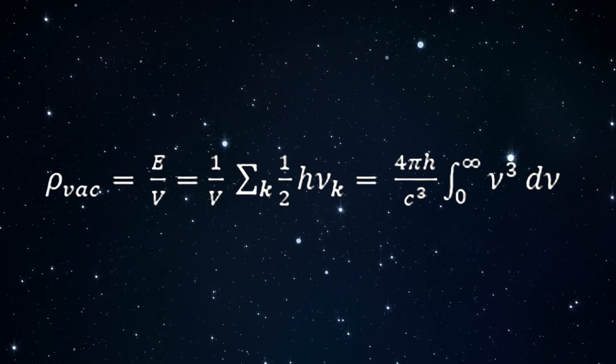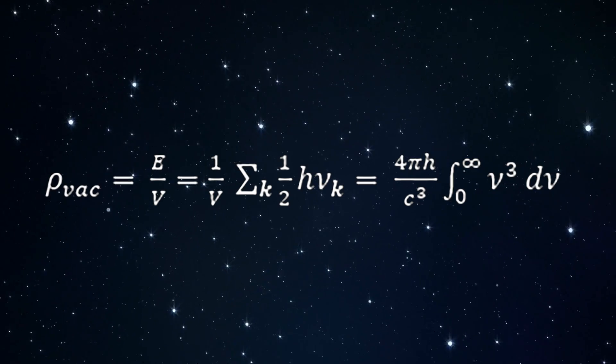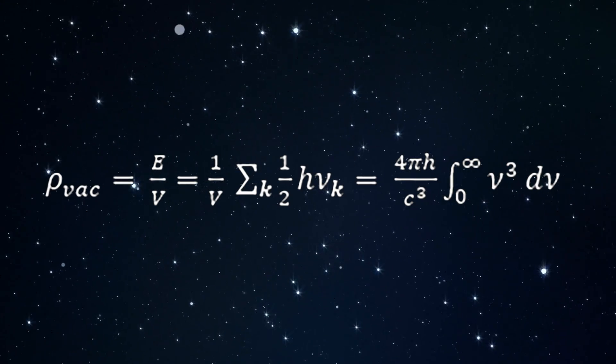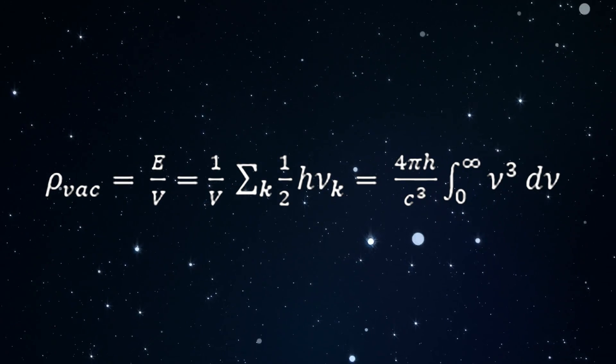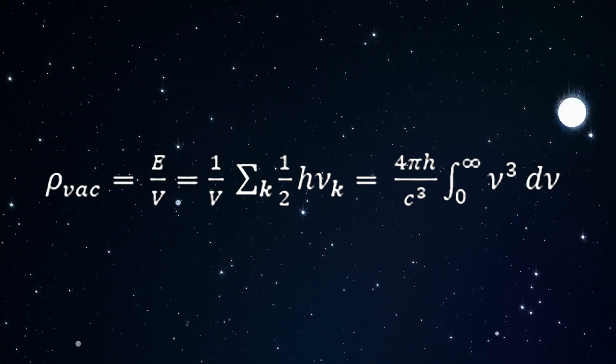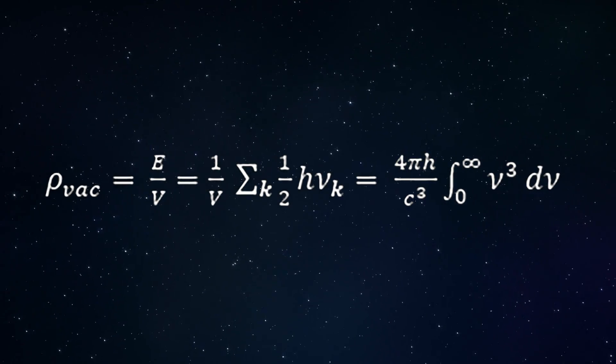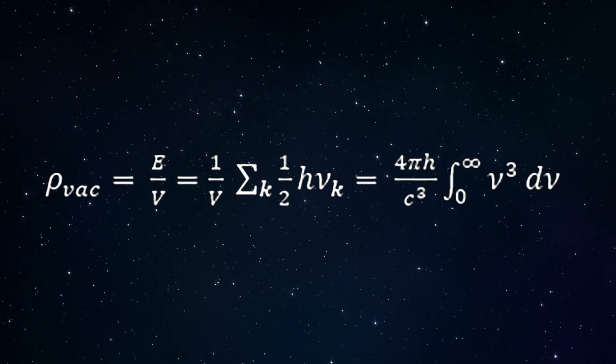The wave vector, k, signifies the normal modes of the electromagnetic field that are consistent with the boundary conditions on the quantization volume, v. As v approaches infinity, one obtains the right-hand side of the equation.